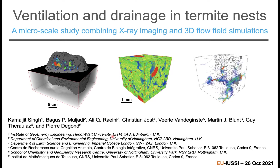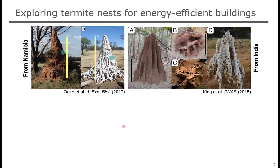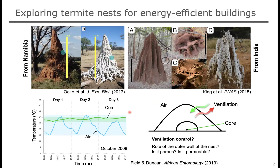We have two collaborators already here, Guy and Christian, who contributed tremendously to this topic. To this community, it's not uncommon to see termite nests; they can grow up to seven meters high. The examples I put here, only two from India and Namibia, grow up to about two meters high. The point is the structure inside can be quite complex, as you can see from the casting images. If we look into the temperature profile outside, depending on the country, it could vary from 15 to 30 degrees centigrade day and night. But inside the nest, it stays within plus or minus two degrees centigrade — it's quite stable.